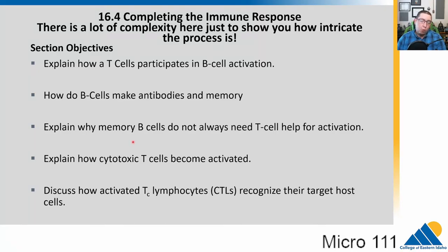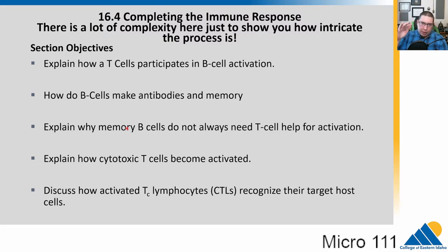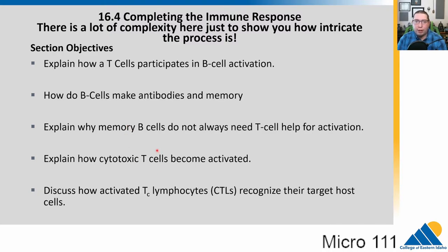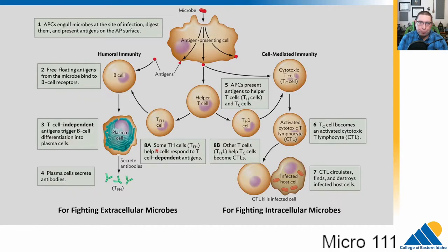In chapter 16.4, we're going to talk about putting all of this together — how we complete the immune response. We'll talk about T-cells and how they activate B-cells, and then how B-cells go on to make antibodies and memory cells. We'll also talk about the cytotoxic side — how cytotoxic T-cells become activated and how they recognize and destroy their target host cells. We'll start on the humoral side, then go to the cell-mediated side.